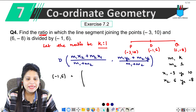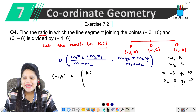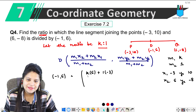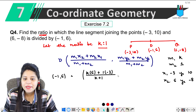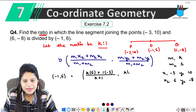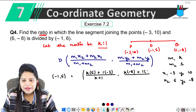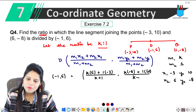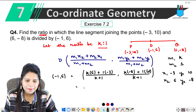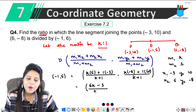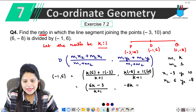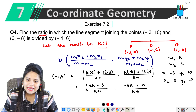So this is equal to — putting in the values: for the x-coordinate, M1·X2 = K·6, plus M2·X1 = 1·(-3), upon M1 + M2 = K + 1, giving (6K - 3) / (K + 1). For the y-coordinate, M1·Y2 = K·(-8), plus M2·Y1 = 1·10, upon K + 1, giving (-8K + 10) / (K + 1).